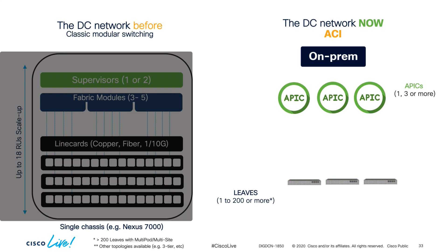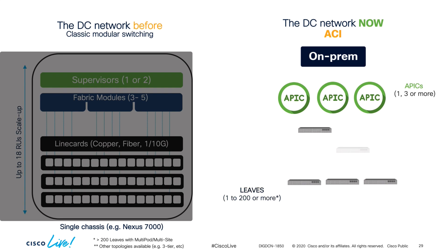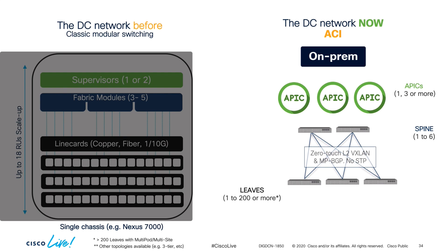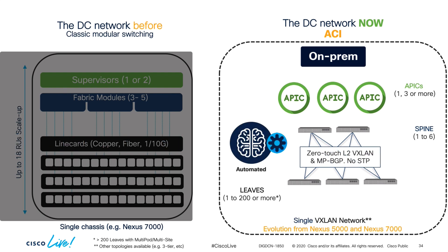To communicate all leaves amongst themselves — since there is no backplane or crossbar, and we don't want to cable all leaves together — ACI requires a spine layer which aggregates connectivity from all leaves. Even starting with one APIC, one leaf, and one spine in a non-redundant environment, ACI dramatically reduces the time to manually provision a VXLAN network by automatically discovering every switch you connect and configuring a routed underlay, the VXLAN overlay, and even MP-BGP with zero configuration on your end.